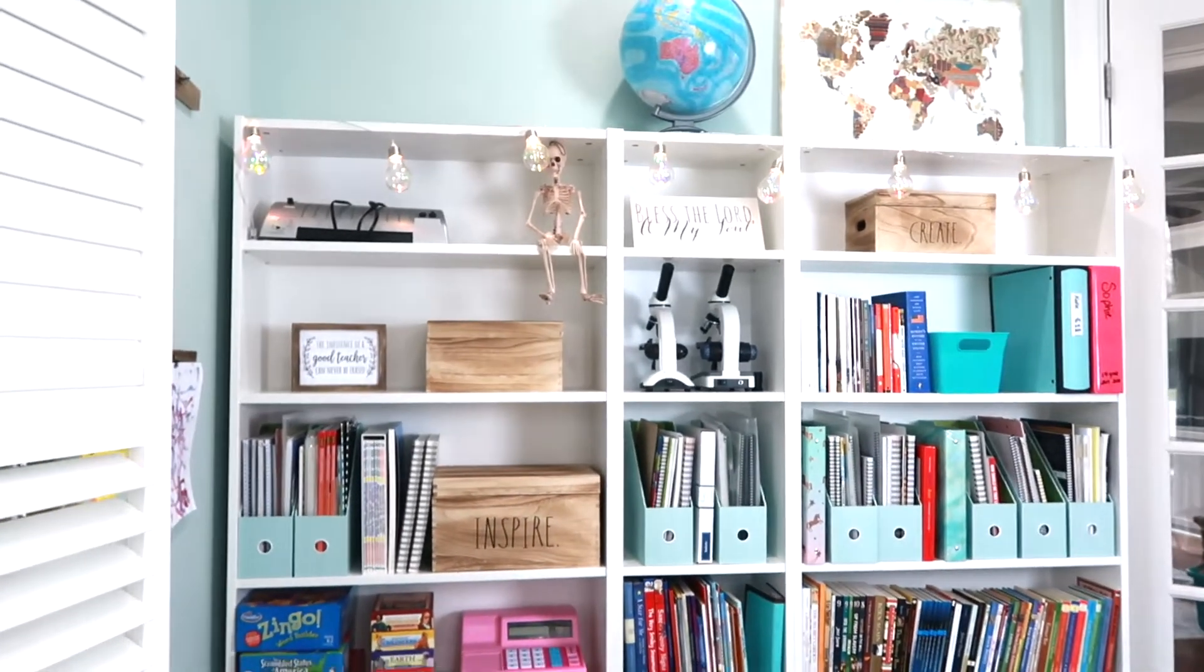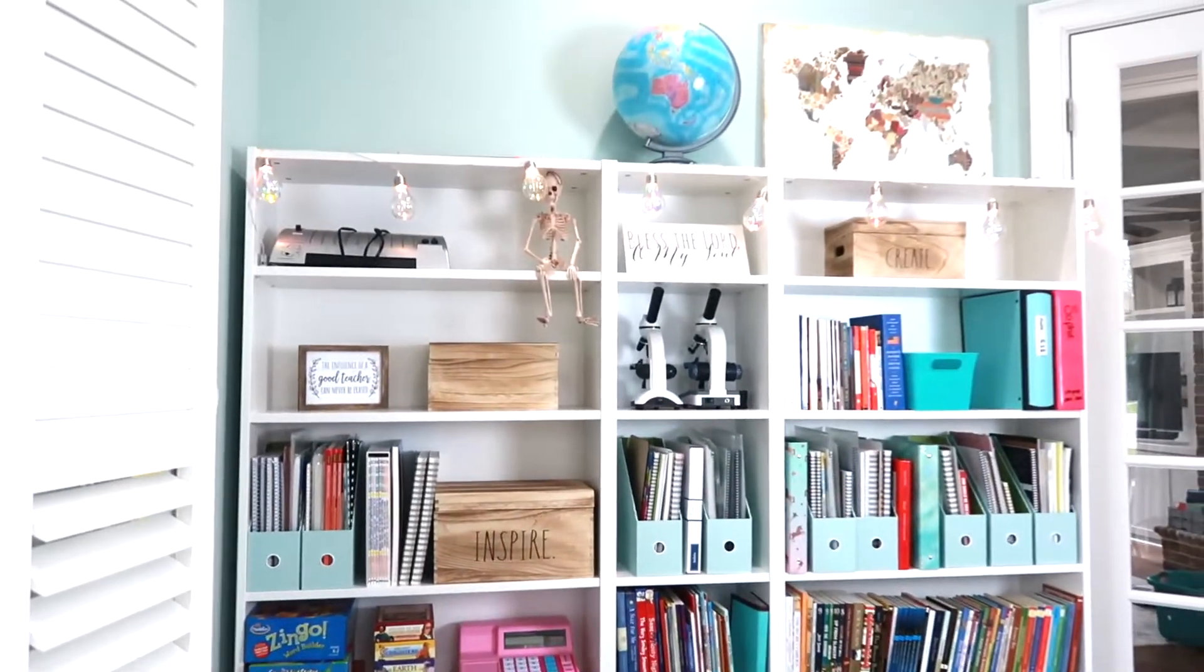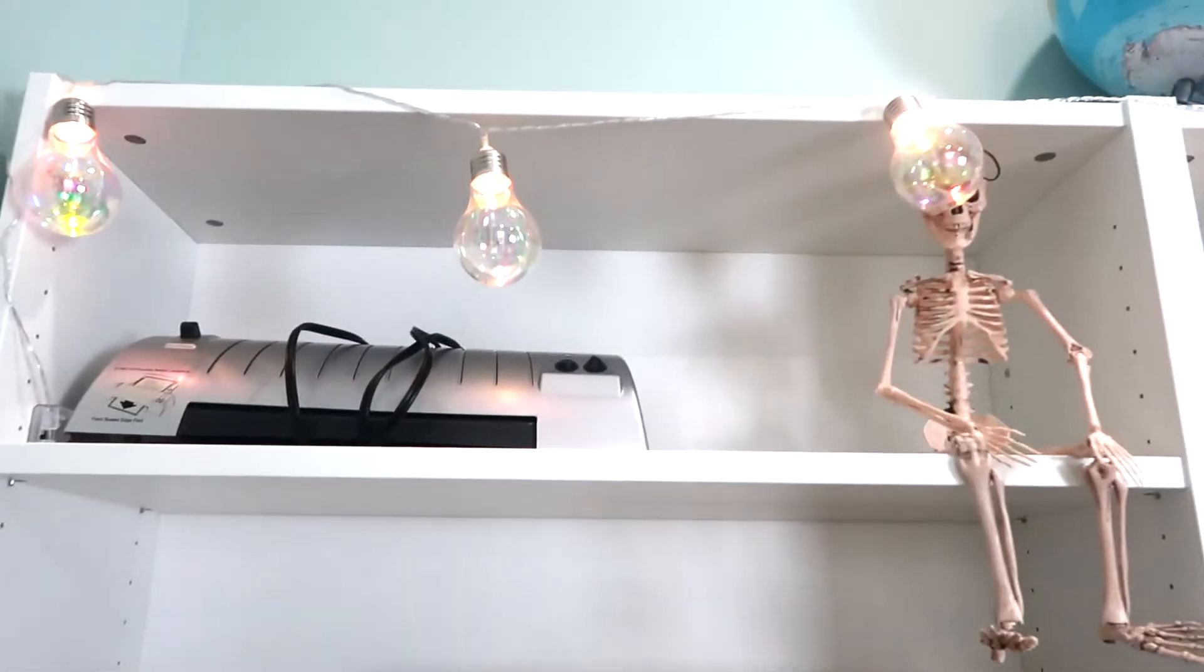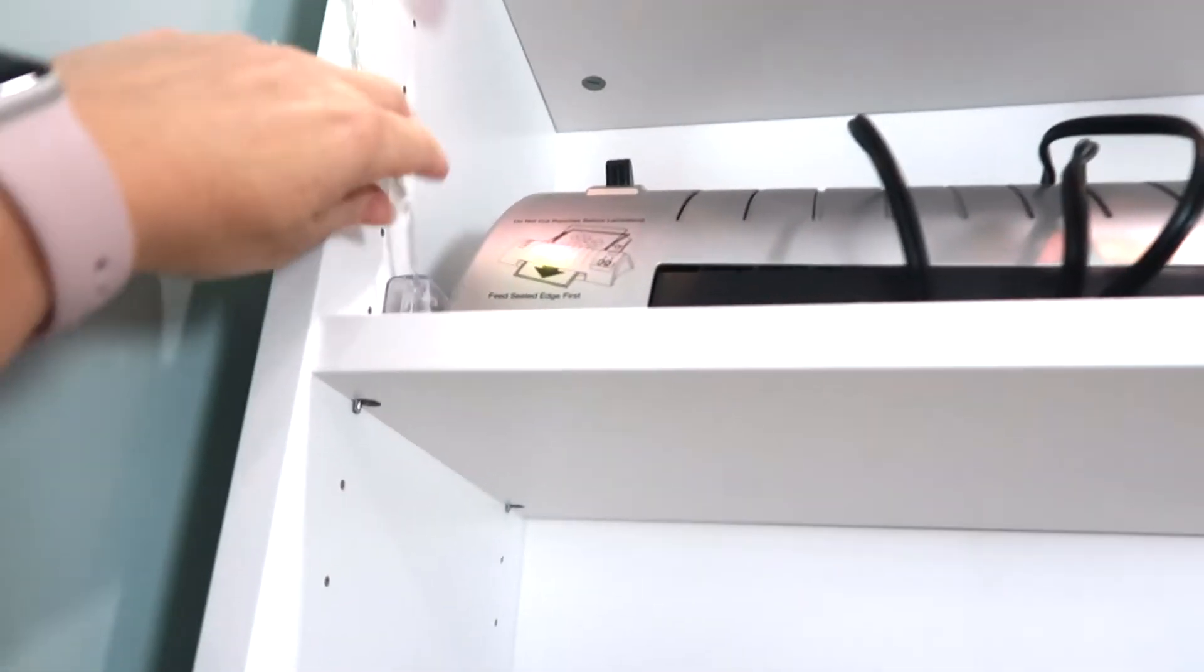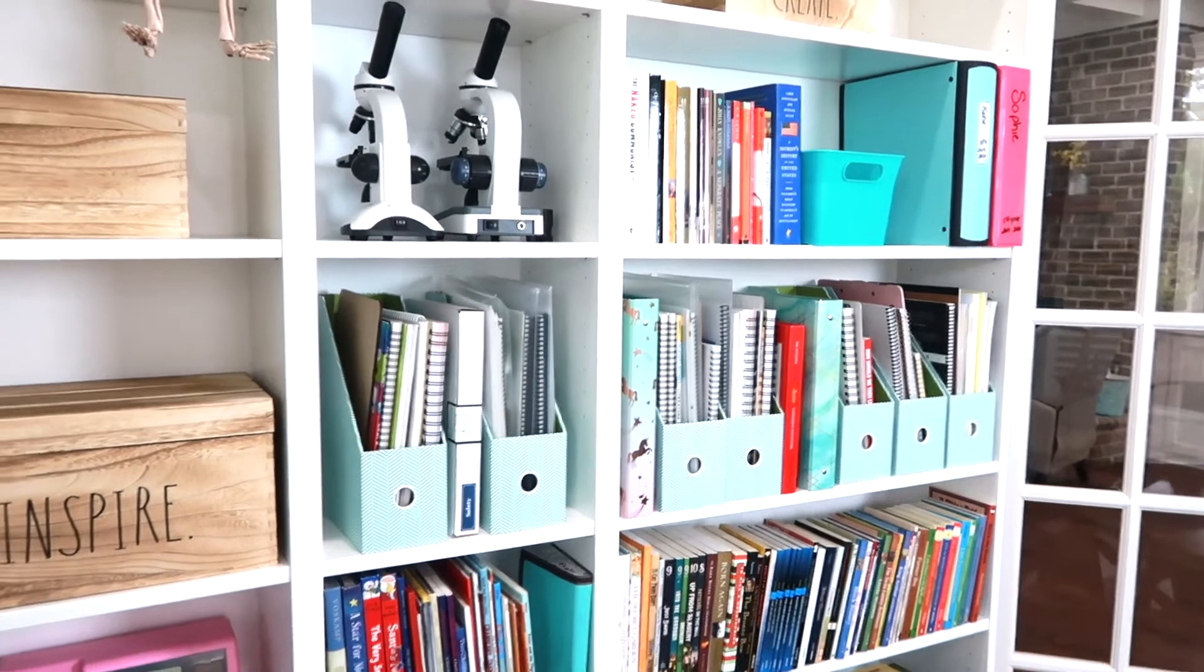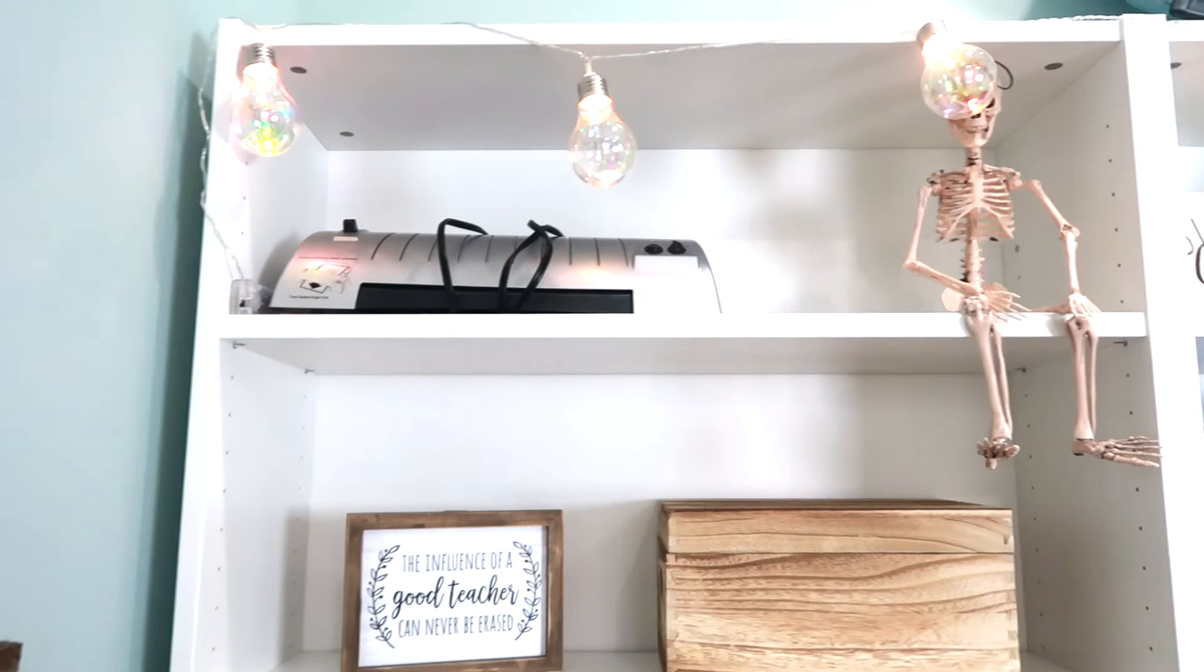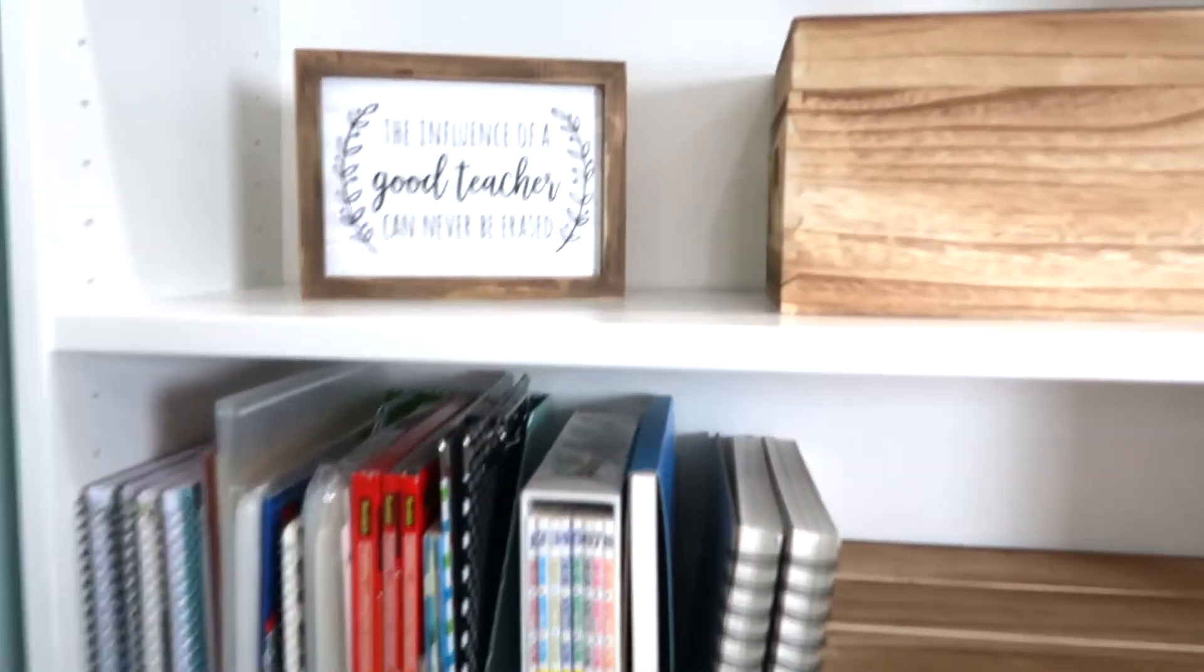Over here this is our big bookshelf. These are from Ikea and they are attached to the wall and also to each other. We got these lights from Hobby Lobby and we just strung those across the top. They're battery powered so you can just turn them on and off right there. My girls really like those. We've rearranged our shelves a little bit more where we know where everything is.